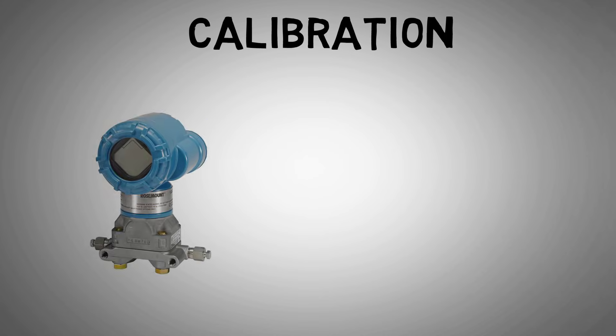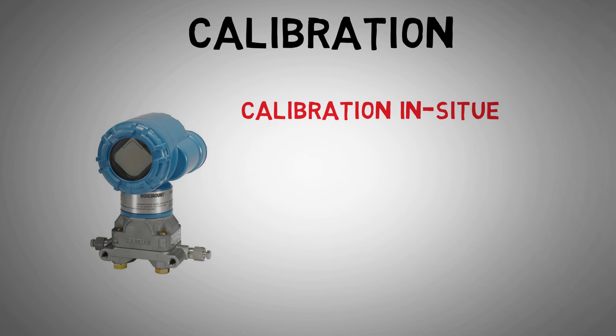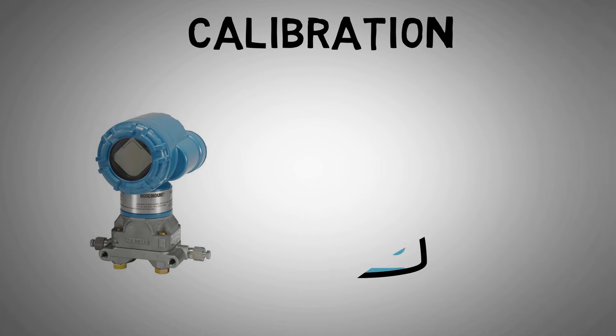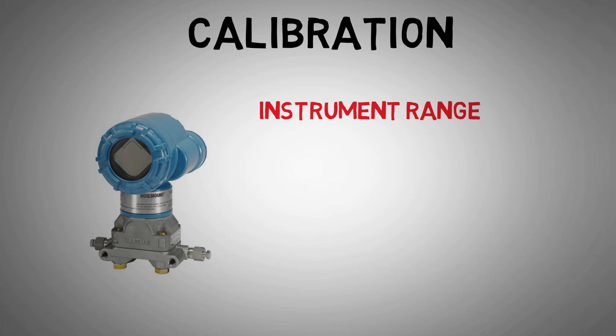Let's look at how we would carry out a calibration using our vessel pressure transmitter as an example. We are going to assume the transmitter has already been removed and is in the workshop ready to be calibrated. Calibration is often performed in situ, but that's something we'll discuss in the follow-up video.